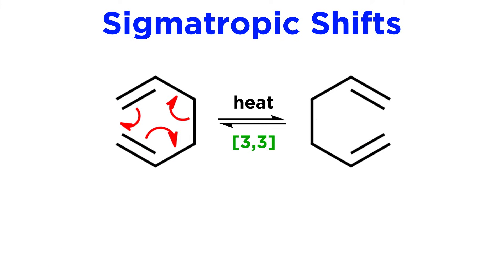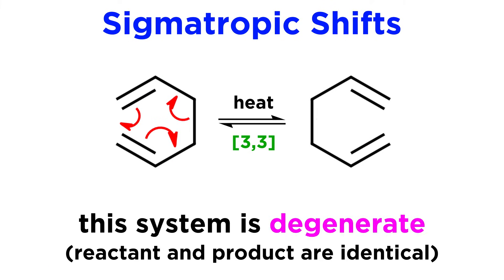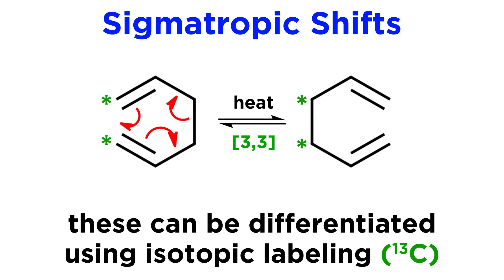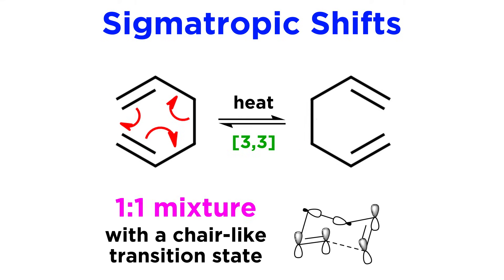Returning to the 3-3 example, this simplest system here can be said to be degenerate. That is to say, the product is the same as the starting material, and can only be differentiated if we were to incorporate isotopic labeling, such as if the asterisks we used earlier implied carbon-13 nuclides. Because this system is degenerate, we can expect a one-to-one mixture with chair-like transition states as it shifts from one form to the other.